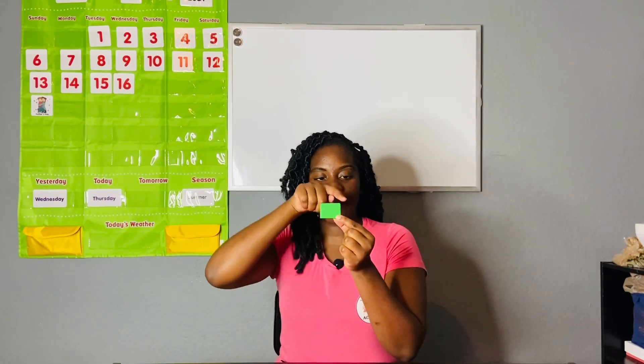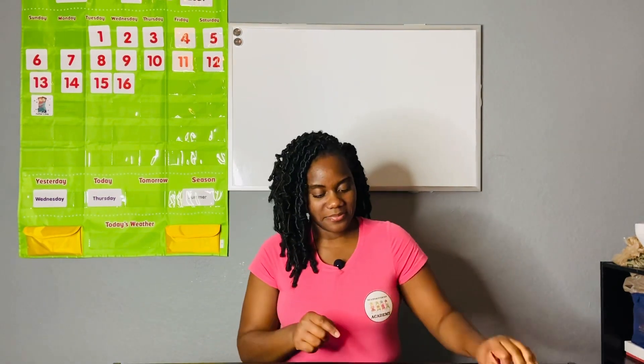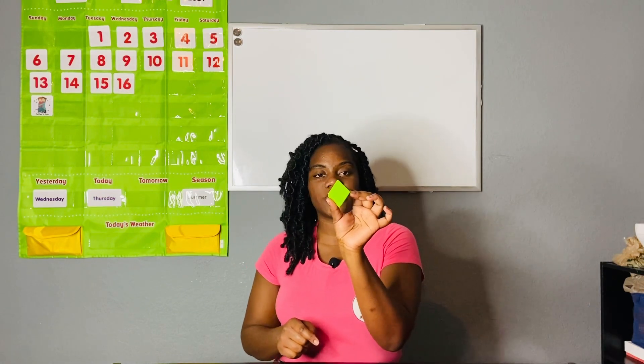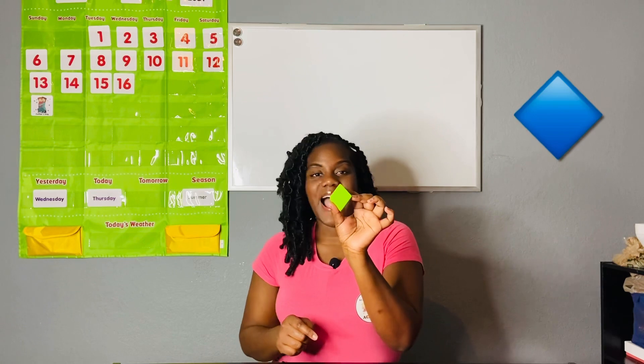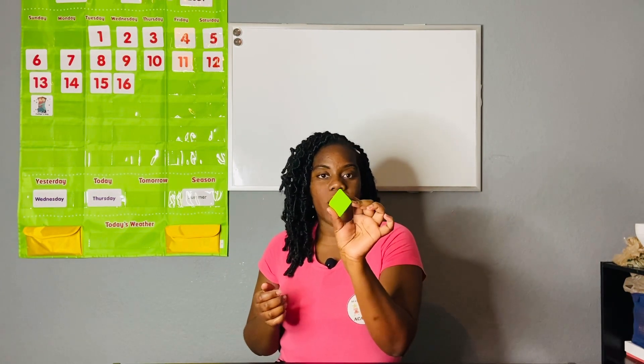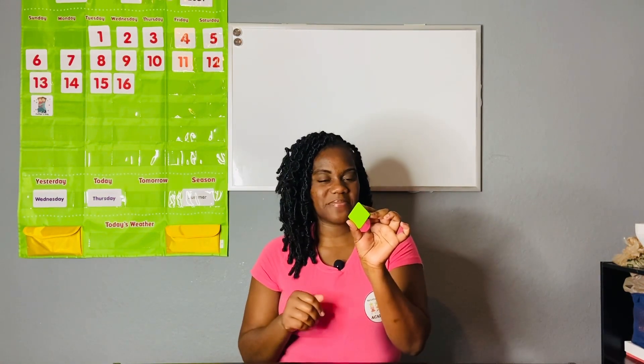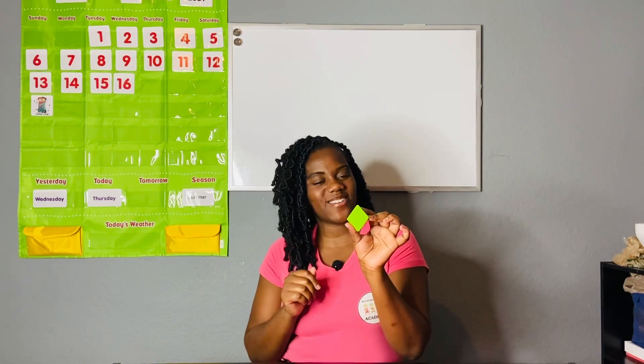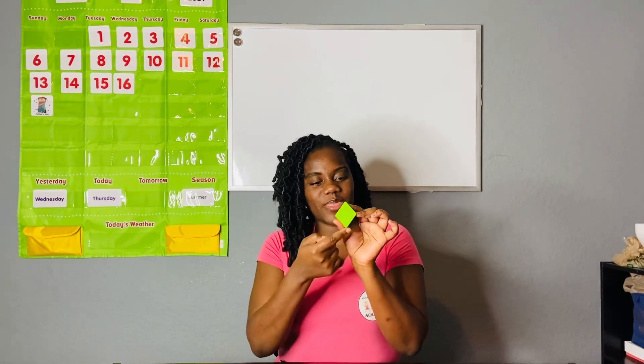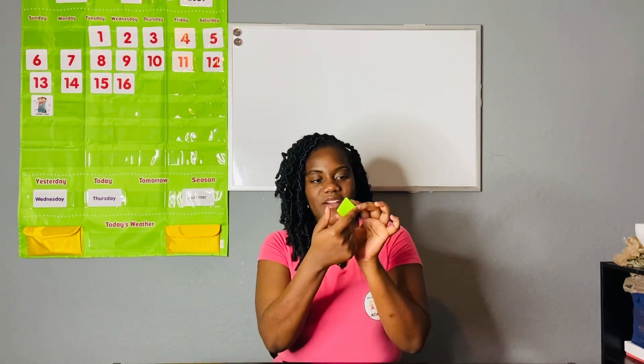The next shape is a special shape. This can be called a diamond, a rhombus, or even a kite. This is also called a quadrilateral shape. It has four sides and four corners. Let's count: one, two, three, four corners; one, two, three, four sides. This is a kite, a rhombus, or a diamond.